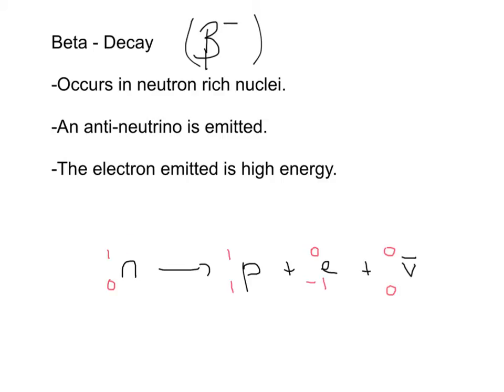We start with a neutron on the left-hand side. That turns into a proton and an anti-neutrino. And this here, just like before, is the representation of an electron. We put a minus one in for its atomic number instead of plus one, like we did for the positron.